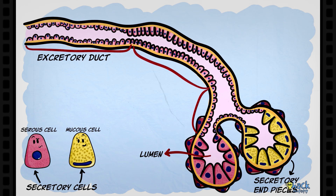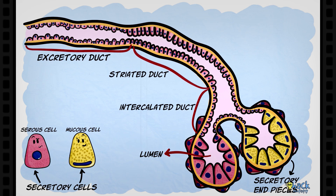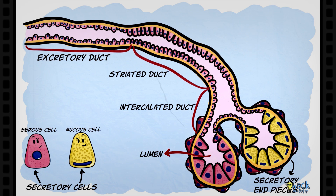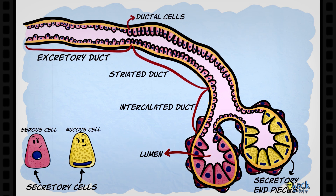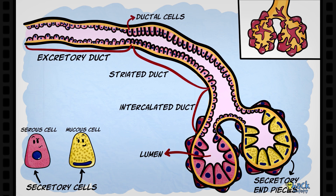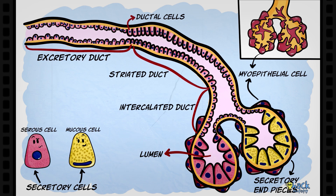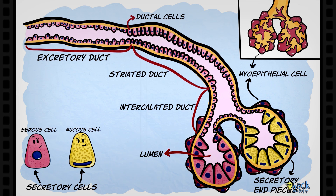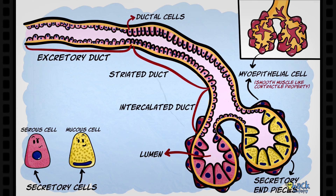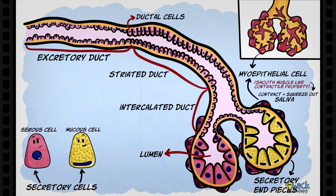The lumen of the end piece opens into the intercalated duct, which is continuous with the striated duct, which in turn opens into the excretory duct of the salivary gland. The ducts are lined by ductal cells. The secretory end pieces and intercalated ducts are associated with stellate-shaped contractile cells called myoepithelial cells. A myoepithelial cell is an epithelial cell that has smooth muscle-like contractile properties, and one of its functions is to contract and help secrete saliva from end pieces to the ducts.